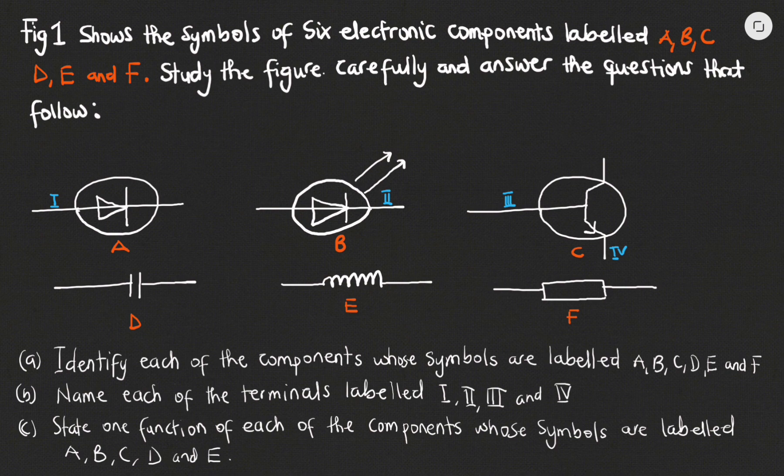You can pause the video and draw the electrical component symbols that you see here and label the parts, so that once I move on to the next page to write the solutions you can follow along. I have the question here on paper. Let's move on to look at the solution to the first aspect of the question, which is to identify each component whose symbols are labeled A to F.